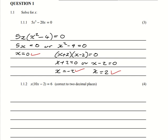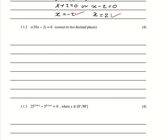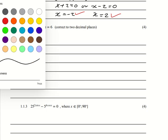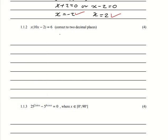The next question, 1.2, is x(10x - 2) equals negative 6. We need to simplify to get a quadratic, then factorise and find the values of x. Distributing gives 10x squared minus 2x, then taking 6 to the other side gives 10x squared minus 2x plus 6 equals 0 — wait, we bring negative 6 across, giving 10x squared minus 2x plus 6 equals 0 in standard form. So a equals 10.